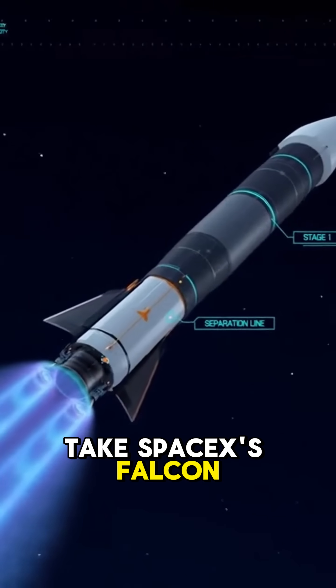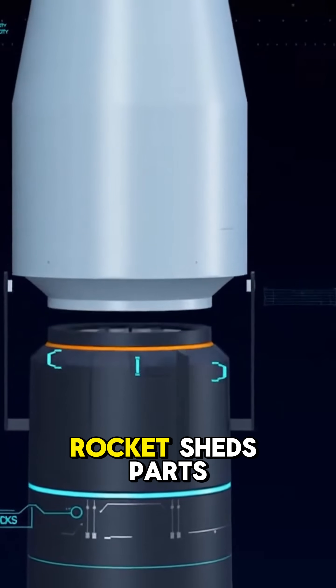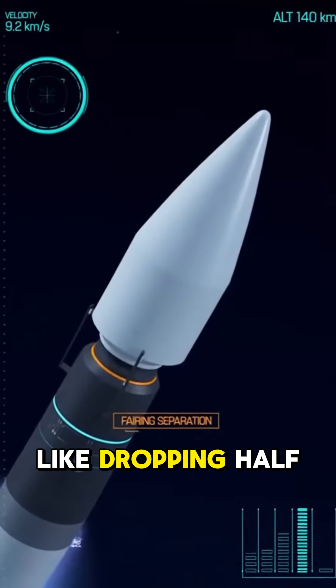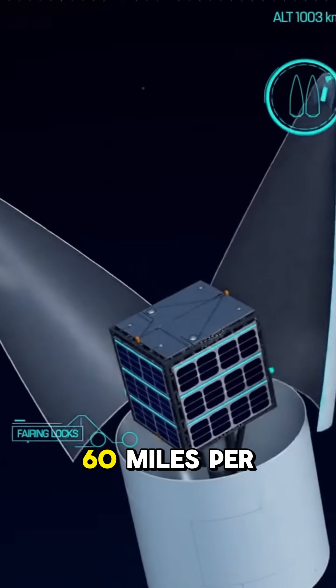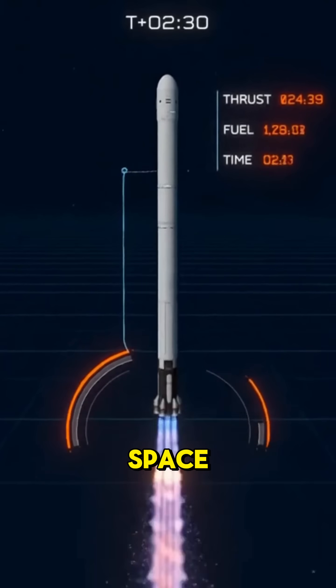Take SpaceX's Falcon 9. This multi-stage rocket sheds parts mid-flight, like dropping half your car on the highway at 60 miles per hour, but 100 times faster and in space.